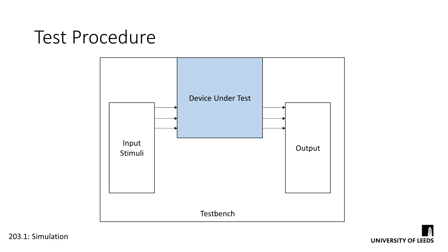So how do we actually develop these test schedules? As opposed to manually stimulating the circuit we want to test, we create a file known as a test bench, which is a self-contained module instantiating our design. This instance is known as the device under test. The test bench will include our input stimuli, either hand-selected or programmatically generated, along with some code to procedurally apply them to our device under test. The test bench then receives the output from the instance, which can be collected in a file by our simulation software to be verified by the test engineers.